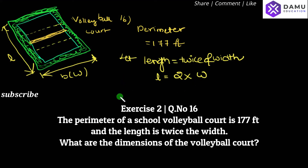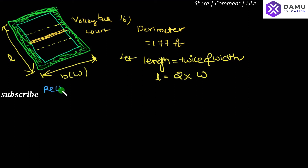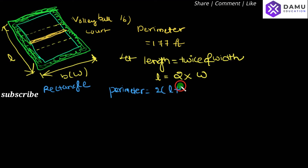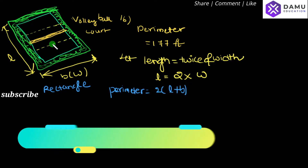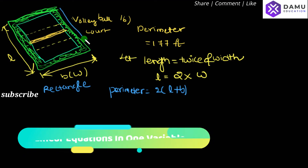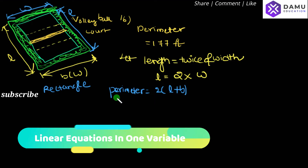Now, what is the perimeter formula? This court is in the shape of a rectangle, so the perimeter will be equal to 2 into (L plus B). There are two lengths and two widths, so two times length plus breadth.